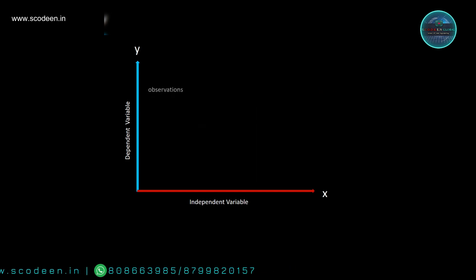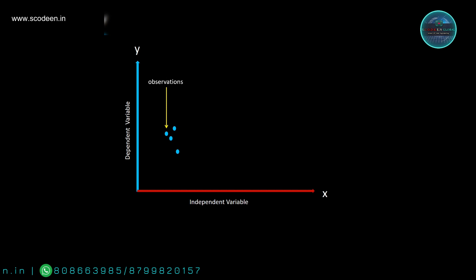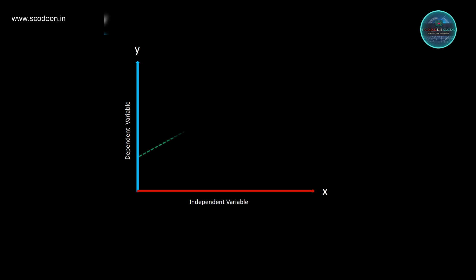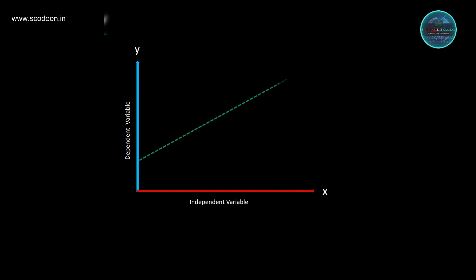We will take some observations and randomly select some points. We place a straight line called the regression line, which is the best fit line based upon the least squares method. We then observe the difference between the estimated point and the actual point — this difference is called the error. We need to minimize these errors.